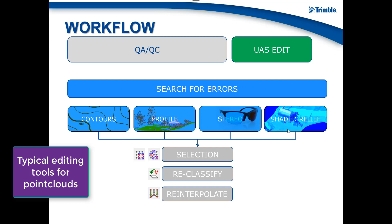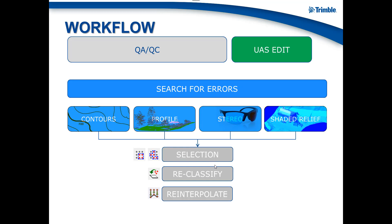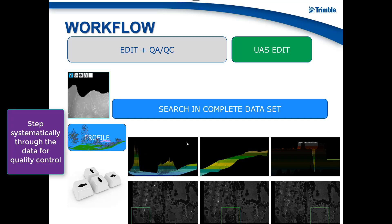It is also possible to do stereo editing in US Master, though we cannot demonstrate it properly in the video tutorial as stereo will not display correctly. We will select errors and re-interpolate wrong measurements. Reclassification is another option for dense point clouds or removing obstacles. We will also step systematically through the data using profile view to guarantee a specific quality of height accuracy before the classic auto photo generation.